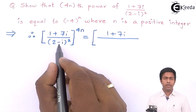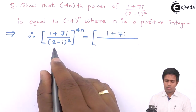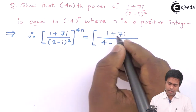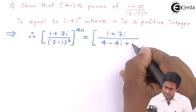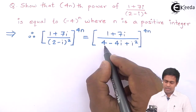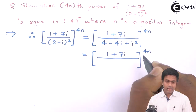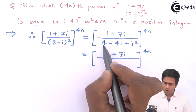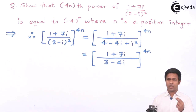The denominator (2 - i)² is in the form (a - b)², so we apply the formula: a² - 2ab + b². That gives 4 - 4i + i². Since i² = -1, we get 4 - 1 = 3, so the denominator becomes 3 - 4i.